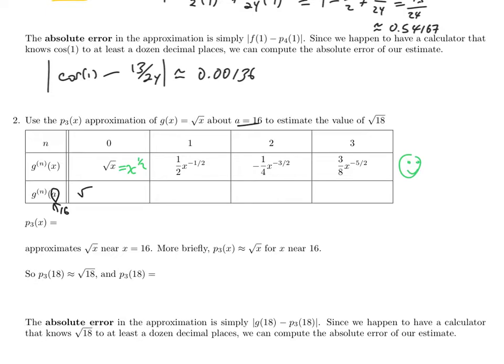So the value I'm plugging into all these derivatives is the number 16. So go ahead and pause the video and see if you can work out what those numbers are, and then come back and I'll go through it. So when we're putting 16 in, obviously the square root of 16 is 4. That's why we're using 16, because it's easy to evaluate the square root function at 16. 1 half times 16 to the minus 1 half, 16 to the minus 1 half is going to be 1 over the square root of 16, so 1 fourth. So a half times a 1 fourth is 1 eighth.